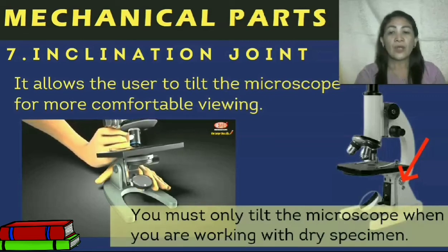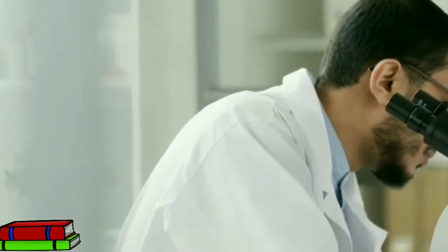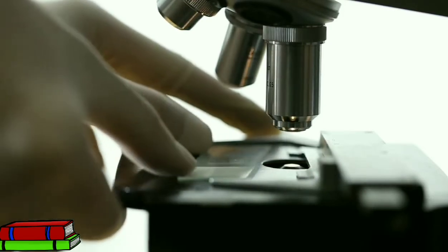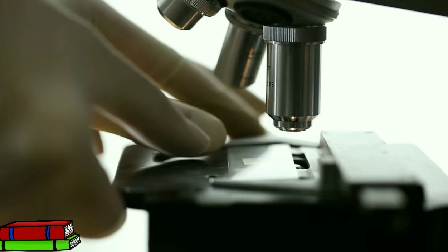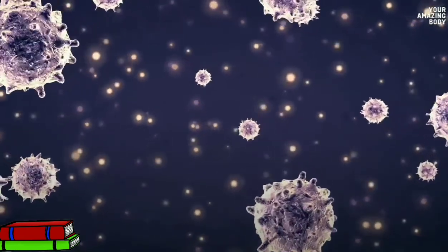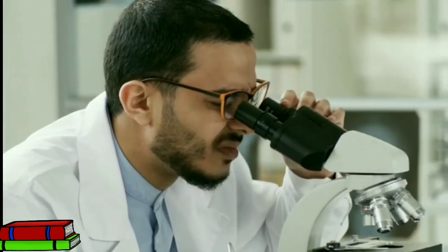However, you must only tilt the microscope when you are working with a dry specimen. And those are the different parts of a compound microscope. They function together in how we manipulate and demonstrate the importance of each part. The microscope has become an important investigation tool in studying objects and organisms around us. Knowing its parts as well as the proper manipulation and care will make our study of science effective, interesting, and meaningful.